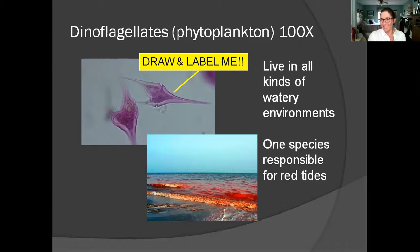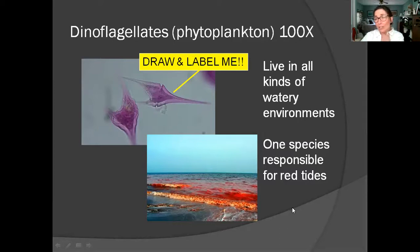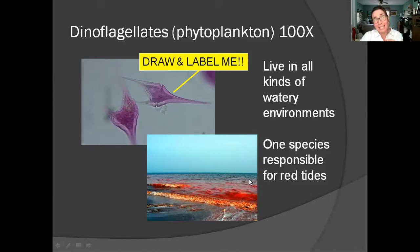Red tides occur when you get an overgrowth of this particular type of algae in part of the ocean. It's actually really damaging for the fishing industry because if the fish eat too much of this plankton, or if the things the fish eat consume too much of the plankton, it can build up in their bodies and can be poisonous to the fish.